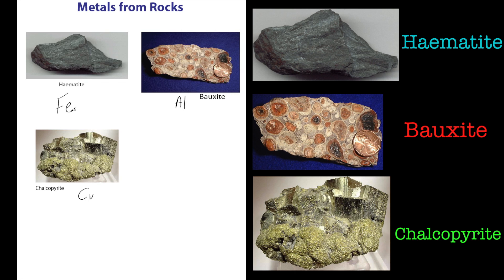So what you need to do as chemists is actually extract the element from the rock. The next stage would basically be to take a lump of rock like that, and grind it up into finer particles. When it's a nice fine particle, as powder or something like that, you can actually try and extract it.